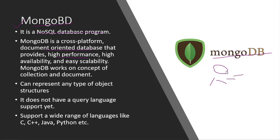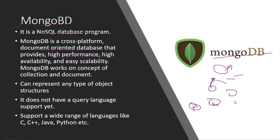One disadvantage of MongoDB is its master-slave architecture. It works with a single master and multiple slaves. If the master crashes, one of the slaves takes over as master, but the time taken for that transition reduces query response time — any database request during that period will not be fulfilled because of the time taken to replace the master with a slave.